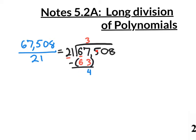Then what happens next is that this number comes down, so you're going to end up with a 45. Now you think, instead of 21, how many times will 21 go into 45? You can simply think: how many times will 2 go into 4? 2 times 2 will give you 4. So let's put a 2 up here, then we distribute: 2 times 1 is 2, and 2 times 2 is 4. We subtract, putting parentheses around that 42. So 45 take away 42, you will have a 3 left over.